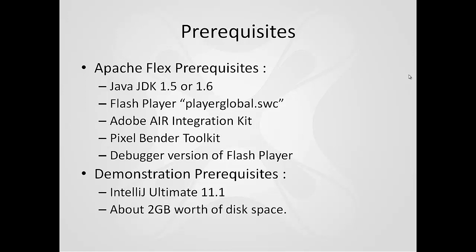For this demonstration, I'm going to be showing how to install and compile and also submit patches using IntelliJ Ultimate 11.1. A lot of these topics are very similar for other IDEs and there will be other videos available for other IDEs at a later time. When you work with the Apache Flex SDK, as far as compiling and all that, you will need about 2 gigs worth of disk space.